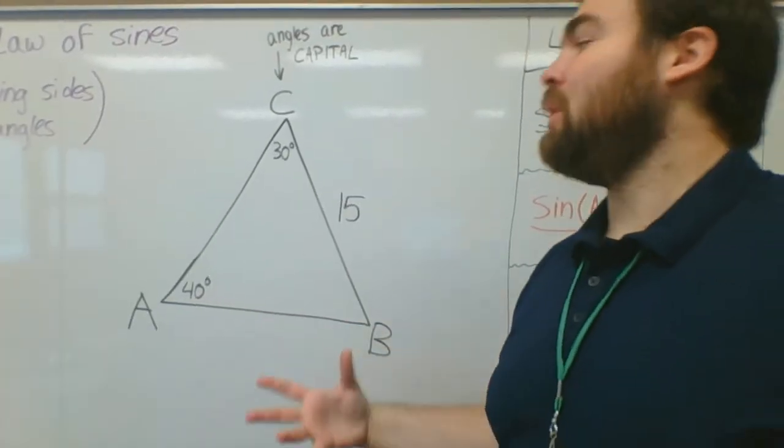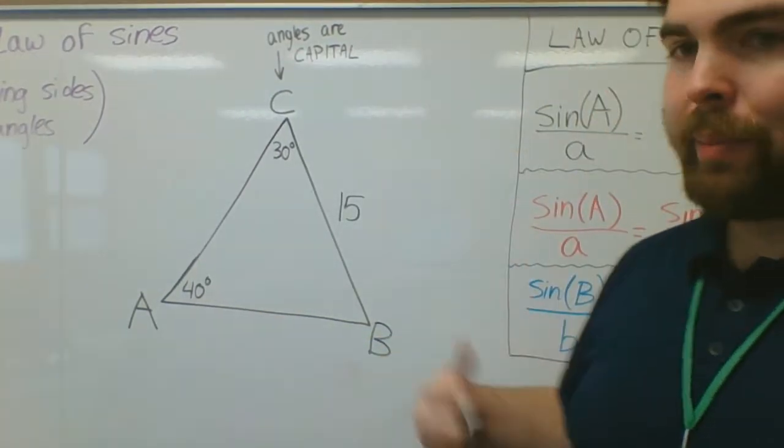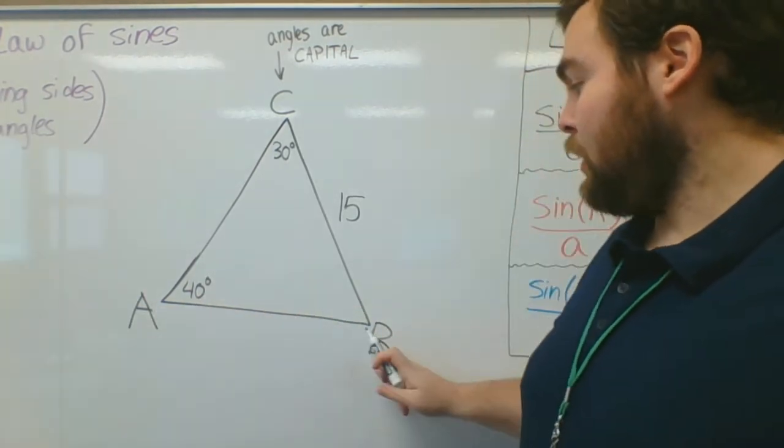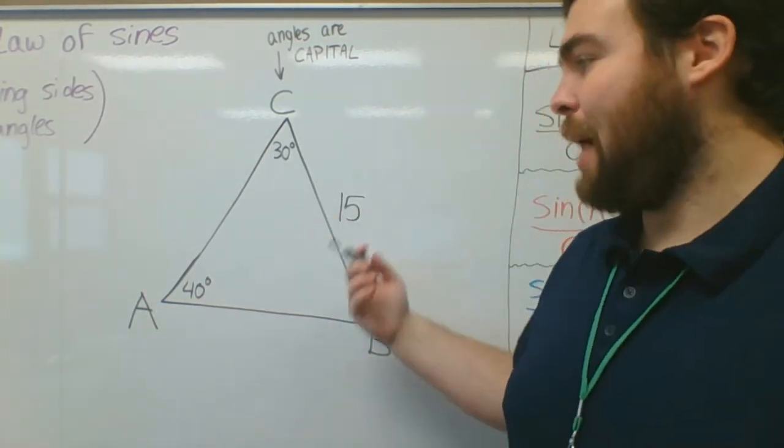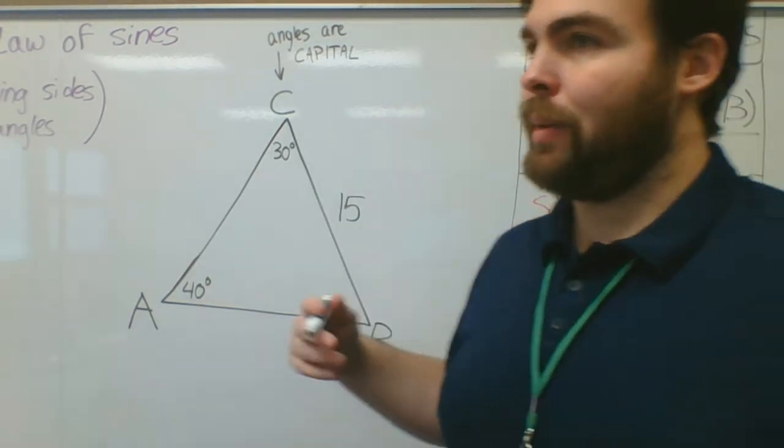First thing we're going to talk about is how to label a triangle. So I've got any triangle here, it can be any shape, any size, whatever it is. I'm going to label the corners, the angles, with capital A, capital B, capital C. I will almost always use capital A, B, and C.